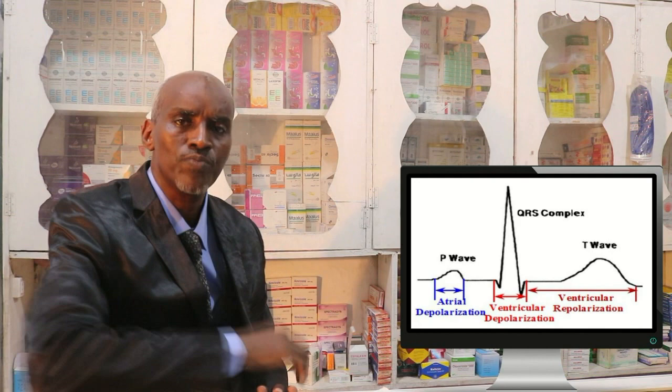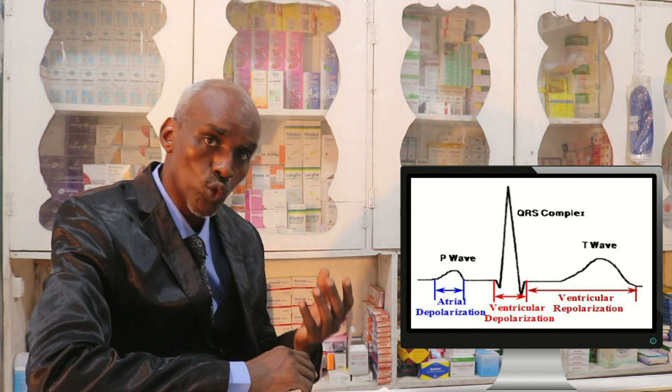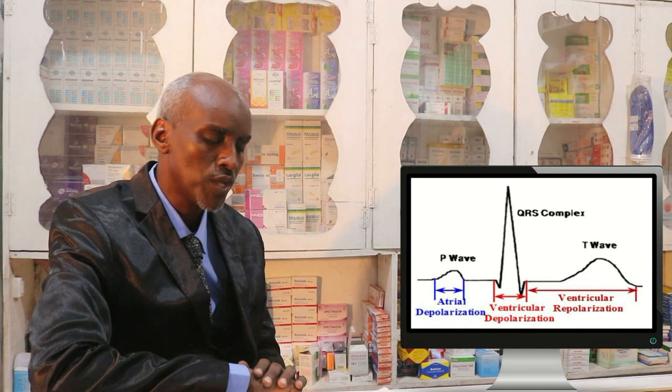The QRS complex is ventricular depolarization. The QRS complex represents ventricular depolarization. This is a very important part of the development of depolarization. This is the part of the ST segment.